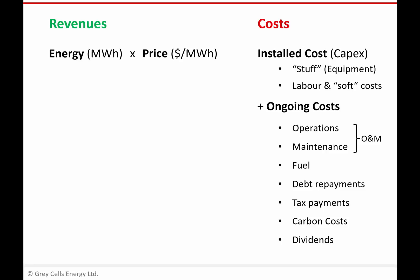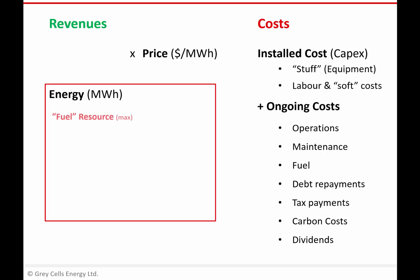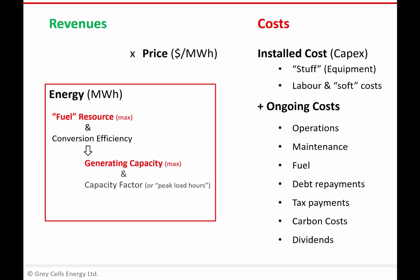On the revenue side, the amount of energy we're going to generate depends on the fuel resource we've got and how efficiently we convert it. If we think about the maximum fuel resource and how efficiently we convert it, that gives us the maximum capacity of our power plant — how much we could generate if it's operating at full capacity. We then introduce the idea of capacity factor, which tells us our actual output, which is less than the maximum we could theoretically generate because our power plant is either not operating for the full time period or it's operating below maximum capacity. We also introduce the term peak load hours, which captures the same kind of thing.